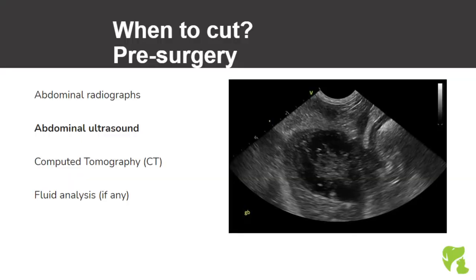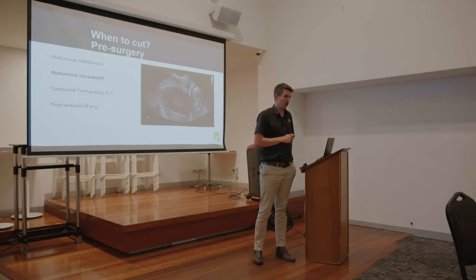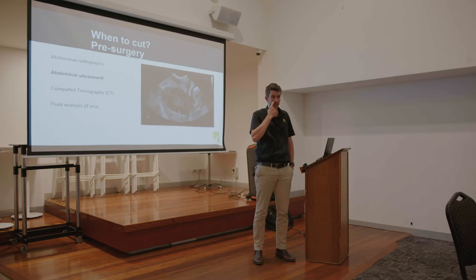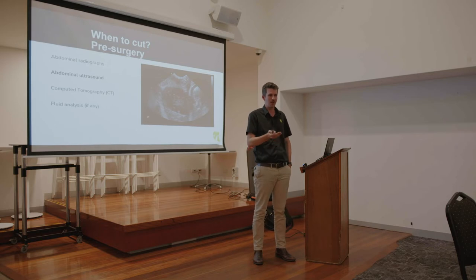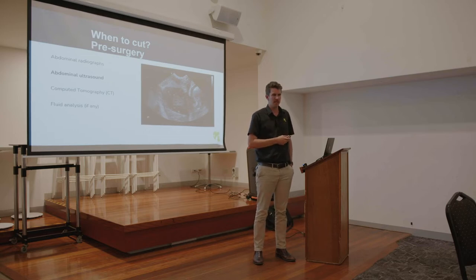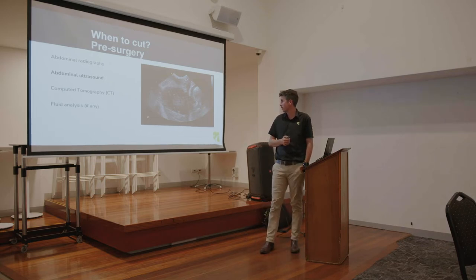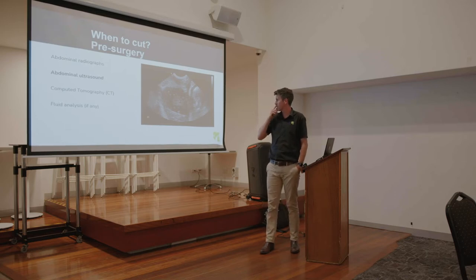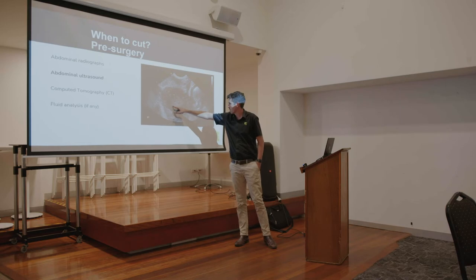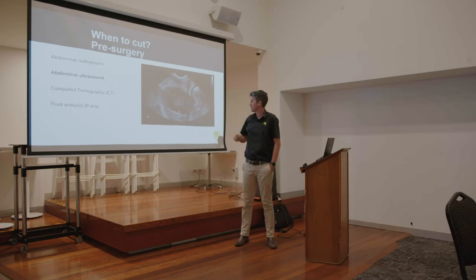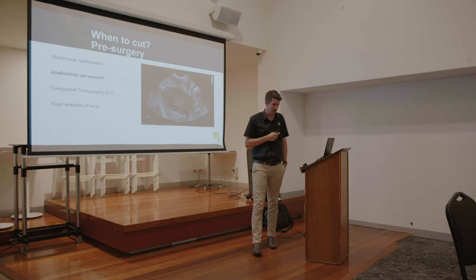Moving on to ultrasound — I don't know a lot about it, but we use it to diagnose a whole bunch of different things. It's probably the mode of choice for intestinal foreign bodies these days, as long as you've got a decent machine and a good ultrasonographer. We also use it for gallbladder mucoceles, neoplasia, especially splenectomies, and hemoabdomens. On screen is a dog with a gallbladder mucocele — you can make out the star-shaped stellate appearance in the gallbladder, which is normally diagnostic.